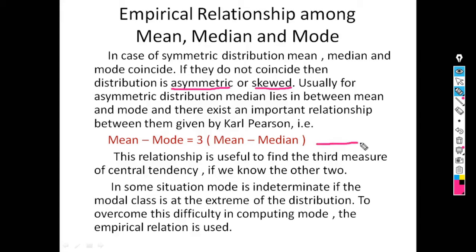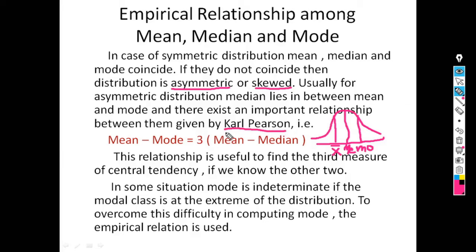In any asymmetric distribution, the median — which divides the distribution into two equal parts — always lies between mean and mode. Diagrammatically, the first value is mean, the middle is median, and the last is mode. This empirical relationship, given by Carl Pearson, is: Mean − Mode = 3 × (Mean − Median).